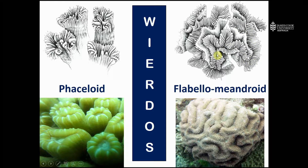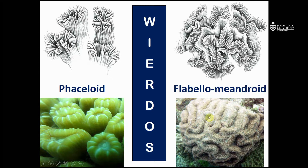We can also have a phaceloid-type growth where it occurs with multiple polyp mouths in between the walls — a morphology we call flabello-meandroid. Again in this example, we have coralites growing on a stalk-like structure, but with multiple mouths occurring within each set of coralite walls. It is a little hard to see in this living coral example because the tissues are so thick, but the shadow here is actually a gap between the valleys or walls of these coralites, which are essentially growing on stalks up out from the reef.